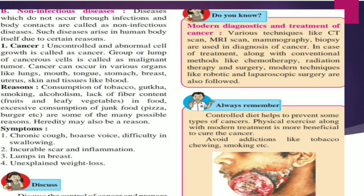Heredity may also be a reason for cancer. The symptoms include chronic cough, hoarse voice, difficulty in swallowing, incurable sores and inflammation, lumps in the breast, and unexplained weight loss. Always remember: a controlled diet helps to prevent some types of cancers.